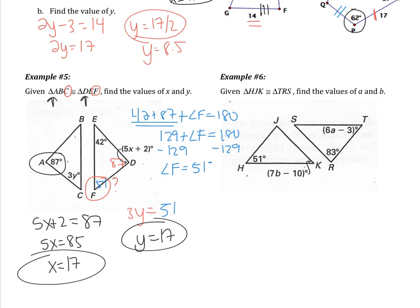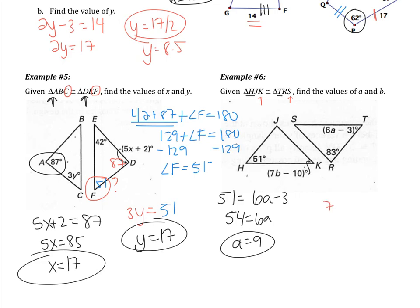Example 6 is for you to do on your own. Pause the video and try it now. Angle H is congruent to angle T, giving 51 = 6A − 3, so 54 = 6A and A = 9. Then angle K is congruent to angle S; using the triangle angle sum to find angle S = 46 degrees, and solving 7B − 10 = 46, you get B = 8. Please fix any mistakes before class tomorrow.